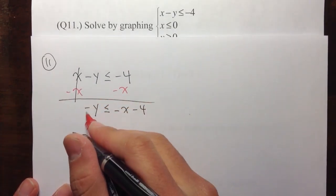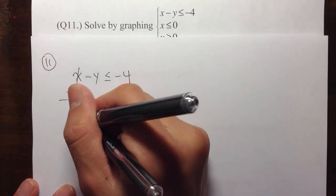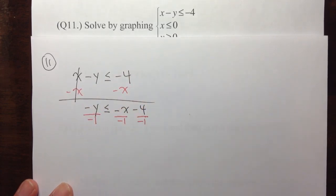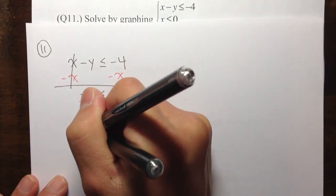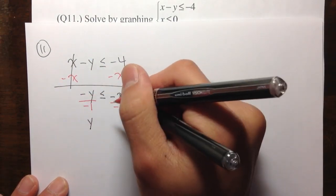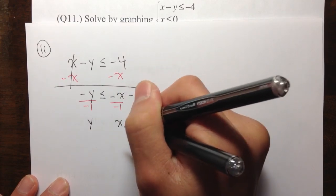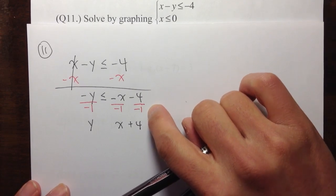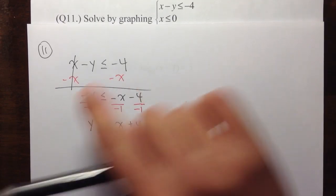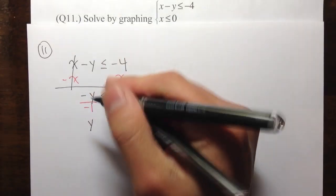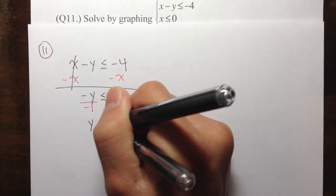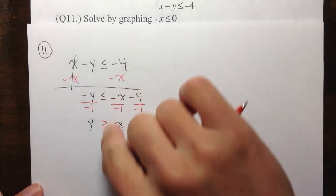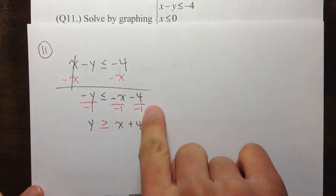Isolate the y — I have negative y, so I need to divide everything by negative 1. Divide everything by negative 1: I get positive y, and then positive x, and negative 4 divided by negative 1 is plus 4. But because we divide by a negative number on both sides, we take the inequality symbol and switch it — it becomes greater than or equal to.